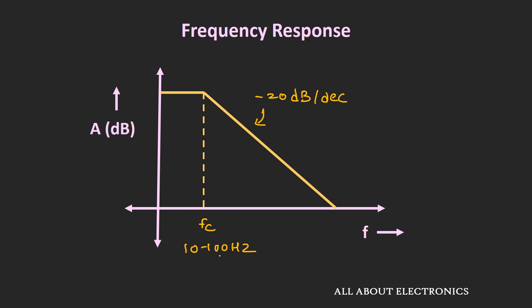Up to this frequency only, the op-amp will have a very high gain. So we can say that in open-loop configuration, the bandwidth of the op-amp is very low. And that is because all the op-amps which we are using today are internally compensated — they all have an internal compensation capacitor. This internal compensation capacitor ensures that the op-amp has a stable response at high frequencies, and because of it the op-amp will have a single break frequency until the point the gain of the op-amp reaches unity.